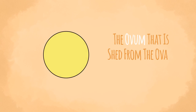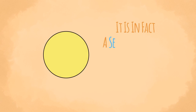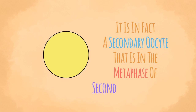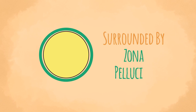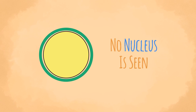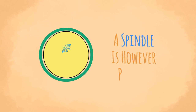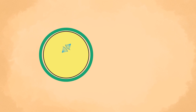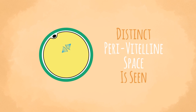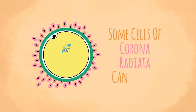Structure of the ovum: The ovum shed from the ovary is not fully mature; it is in fact a secondary oocyte in the metaphase of the second meiotic division. At this stage, the ovum is surrounded by the zona pellucida. No nucleus is seen, as the nuclear membrane has dissolved for the second meiotic division, though a spindle is present. Between the cell membrane and the zona pellucida, a distinct perivitelline space is seen, where the first polar body lies. Some cells of the corona radiata can be seen sticking to the outside of the zona pellucida.